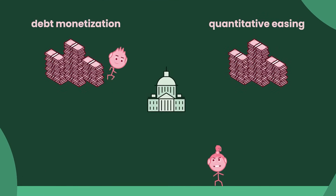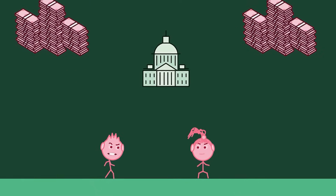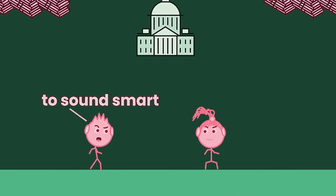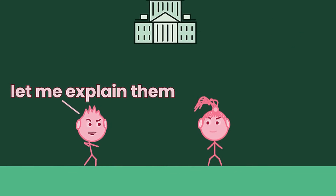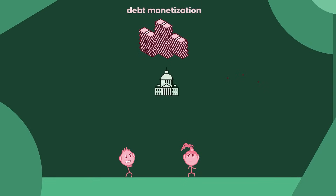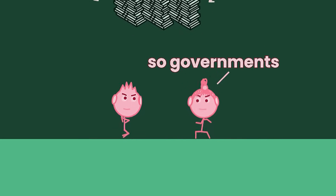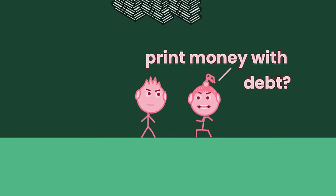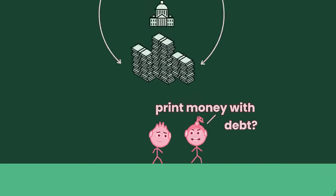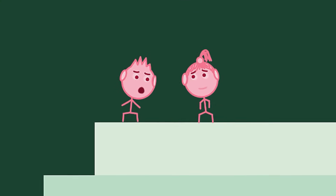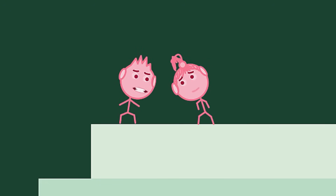Do you expect me to know what that means? These are words economists use to sound smart, so let me explain them. Debt monetization is a fancy way of turning debt into money. So governments print money with debt? That doesn't make any sense. Okay, let's look at an example.